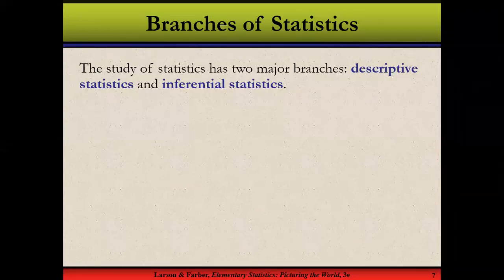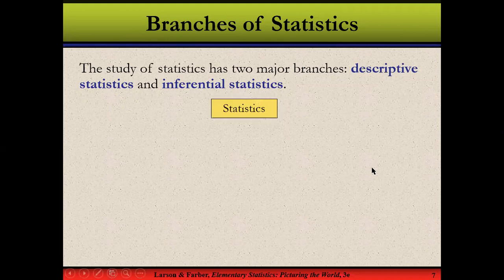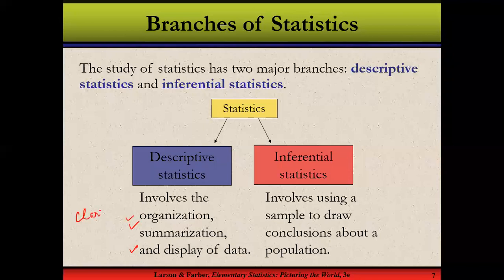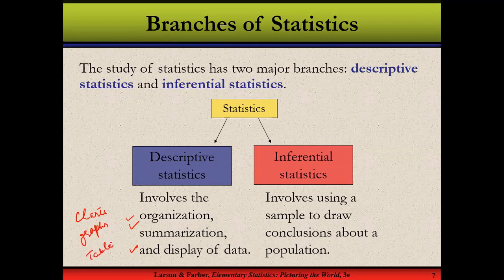There are two branches of statistics: descriptive statistics and inferential statistics. Descriptive statistics involves the organization, summarization, and display of data. We collect the data and try to portray it in the form of charts, graphs, and tables — we don't run any particular analysis, we simply present the data in a more meaningful form, as a picture speaks more than a thousand words.